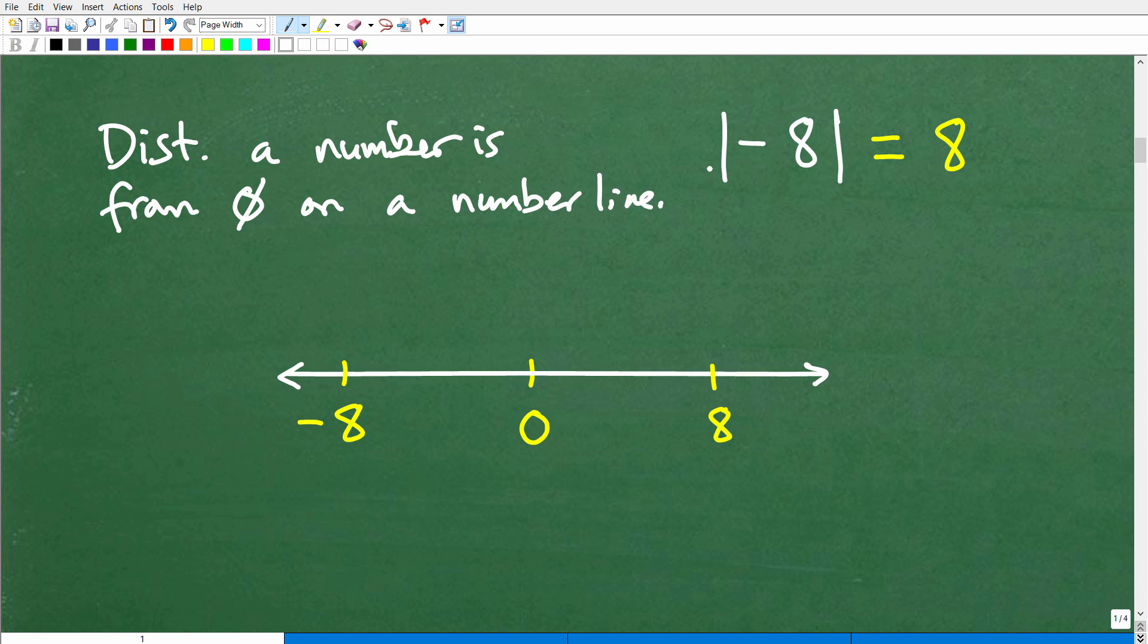So if we're asking right here, what's the absolute value of negative 8? We're asking, how far is negative 8 from 0 on a number line? So let's go ahead and plot negative 8 from 0. So here's negative 8 right here. This is a number line. Here's 0. So how far is negative 8 from 0?